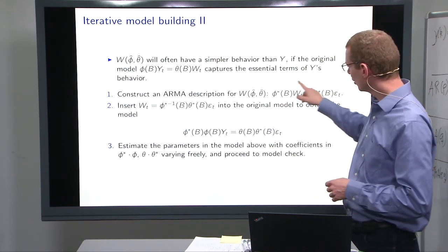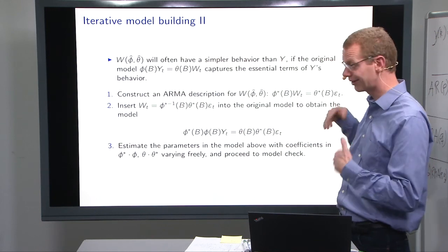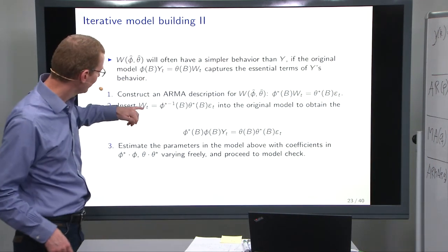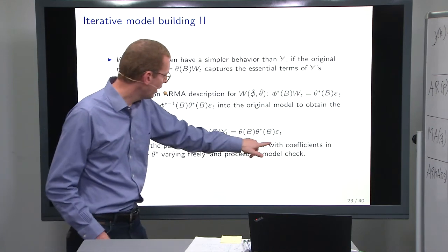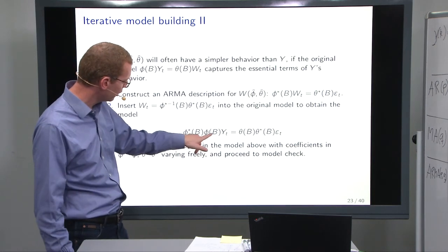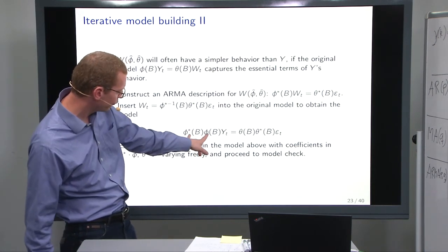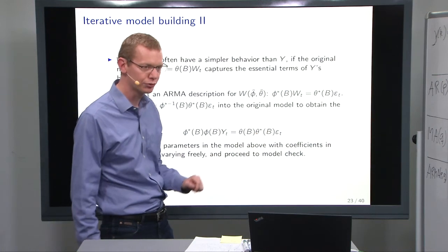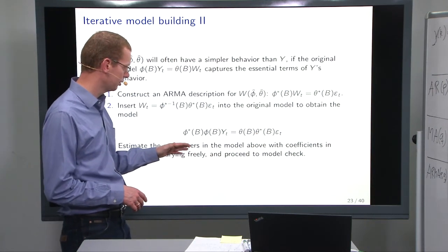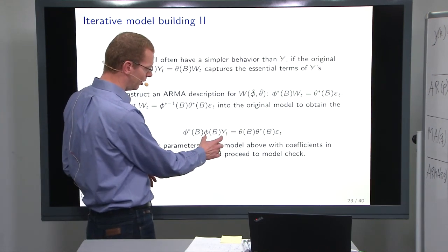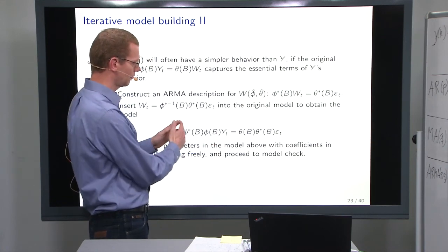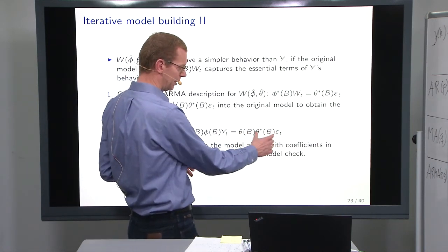If now I can make a good model for those residuals or good estimate of what the model should be, then I can plug that in to the original model and get the phi polynomial back on the left-hand side. And basically, I multiply the two different phi polynomials and two theta polynomials. And then I estimate the models in that model. Say, if this was an AR1 and this was an AR1 model, I get an AR2 model. Likewise for moving average parts.